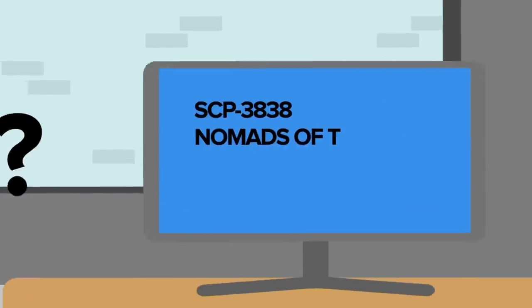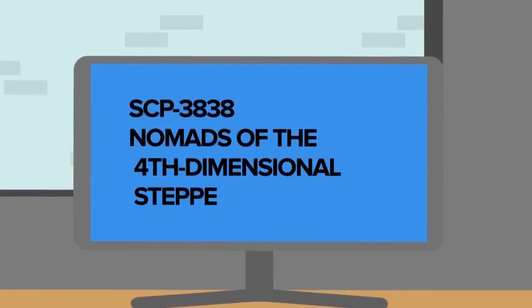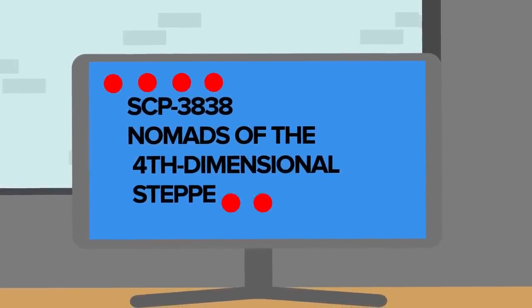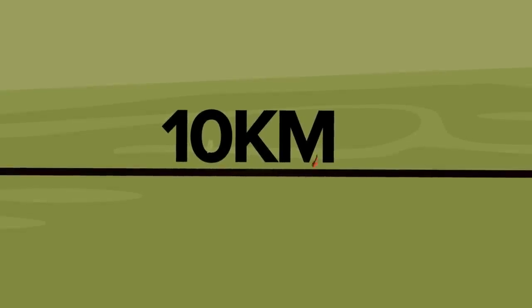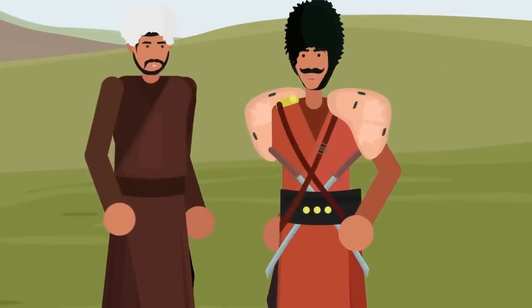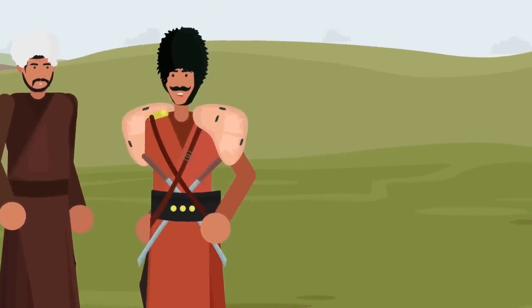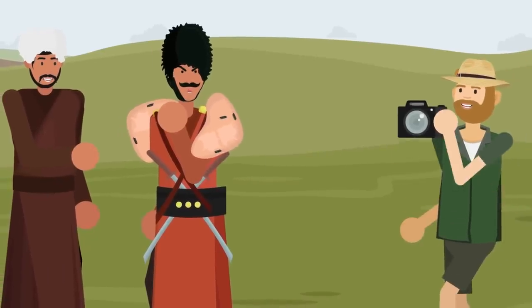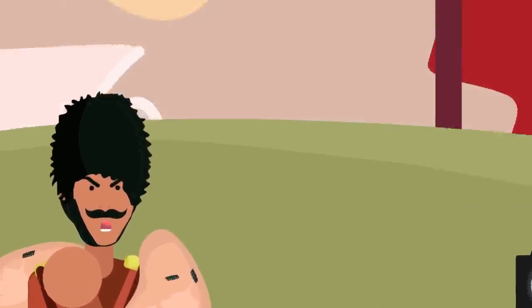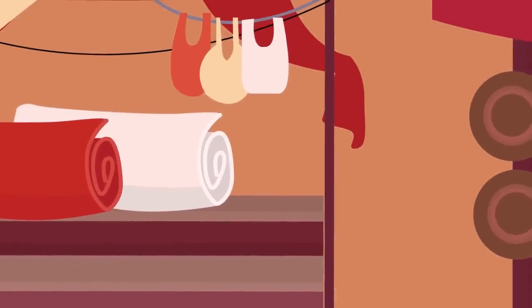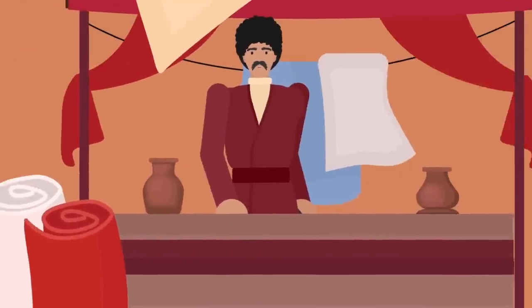SCP-3838, Nomads of the Fourth Dimensional Steppe, is a collection of eight nomadic tribes occupying a small area of ten kilometers. They all seem to be of similar origin, but they are very different in behavior and in the way they interact with outsiders. While multiple tribes can share the same space, they don't all exist in the space at the same time.